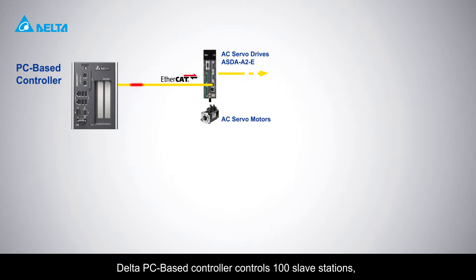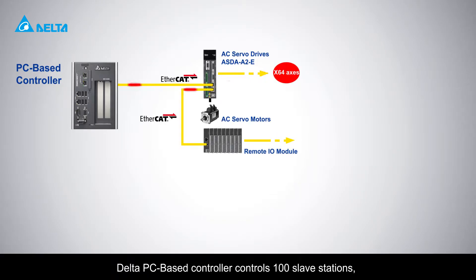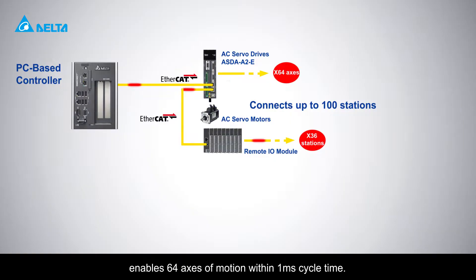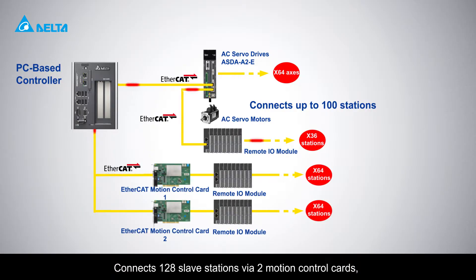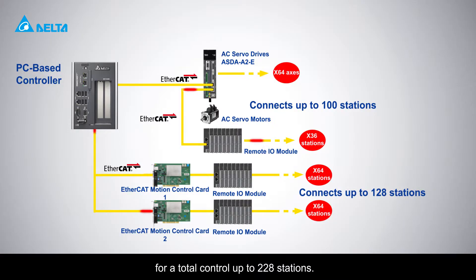Delta PC-based controller controls 100 slave stations, enables 64 axes of motion within one millisecond cycle time, and connects 128 slave stations via two motion control cards for a total control of up to 228 stations.